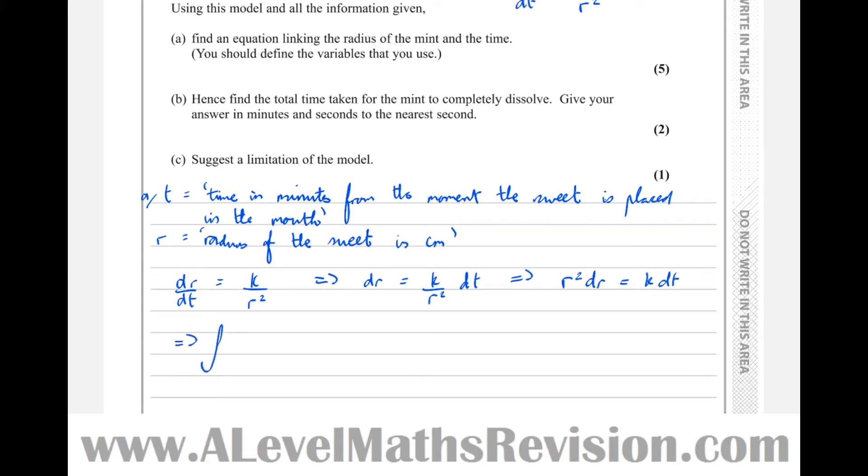So that means the integral of r squared dr equals the integral of k dt. So adding one to the power on the left-hand side, we get a third r cubed and dividing by the new power equals kt plus c.